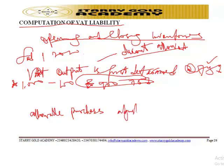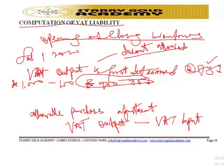Allowable purchase adjustments include discount received and returns outward. The VAT liability for the period is then the VAT output less the VAT input added together.